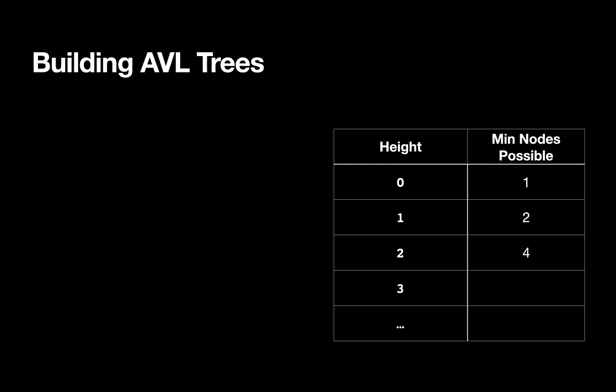We could continue this approach with a tree of height three, but writing out all possible valid AVL trees and figuring out which one has the minimum number of nodes seems a little awkward. Instead, I'm going to take a slightly different approach — constructing the smallest possible tree. If I want to make a tree of height three, I can start with smaller trees and construct it. I take a tree of height two, put a new root node on it, and in order to make a valid AVL tree, I need a right child with a height of one, using as few nodes as possible.